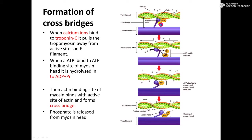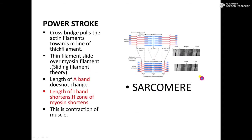Whenever the cross bridge is formed, inorganic phosphate is released into the sarcoplasm. A conformational change occurs in the myosin head and it pulls the actin molecule towards the myosin — that is known as the power stroke. The cross bridge pulls the actin filament towards the M line, or towards the inner side of the A band. The actin filaments slide over the myosin filaments, which is why the theory is called the sliding filament theory.